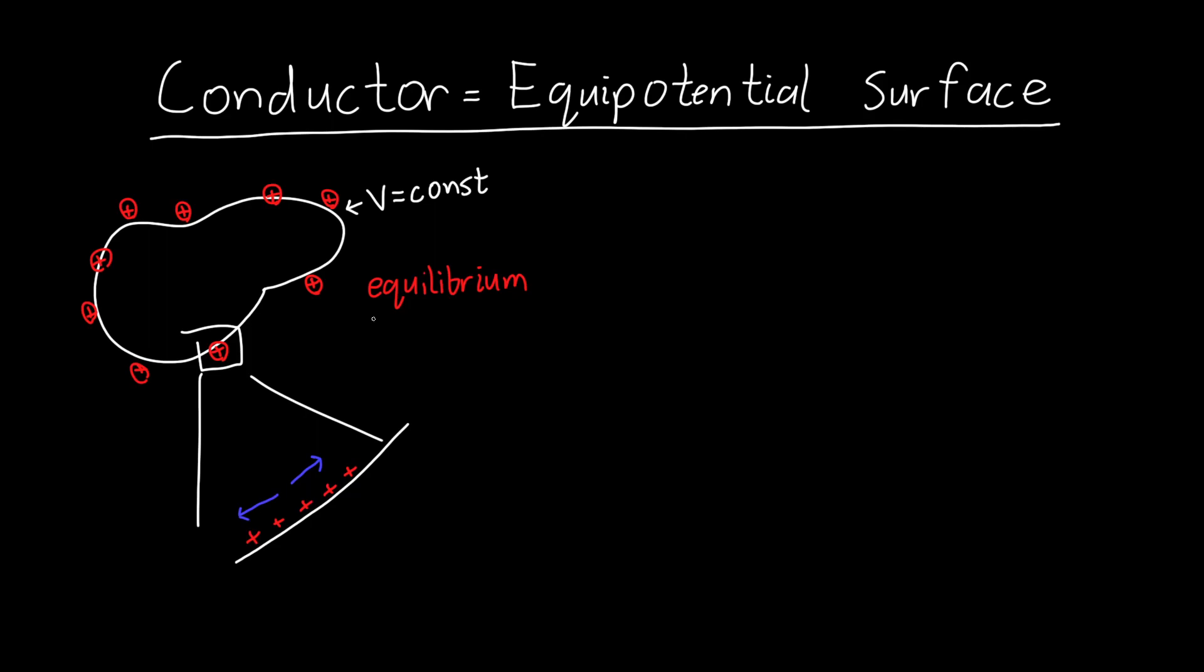But we said that this is in equilibrium, so the charges aren't moving anymore, which means the only direction that the electric field can point is outwards from the surface. It's perpendicular to the surface, because no matter what the force is on each of these individual charges, because they're bound by the conductor, they can't escape. So the electric field has to be pointing outwards if the system is in equilibrium.